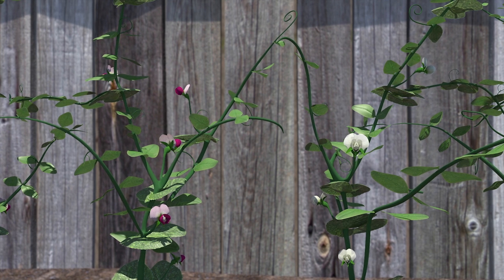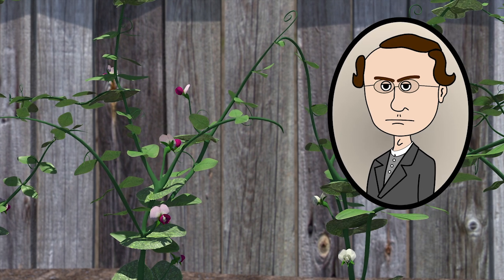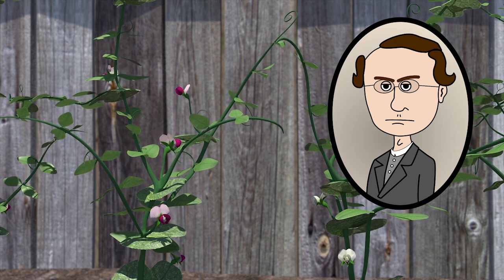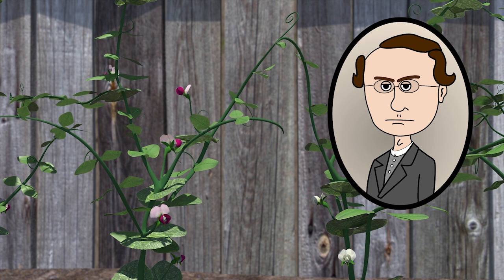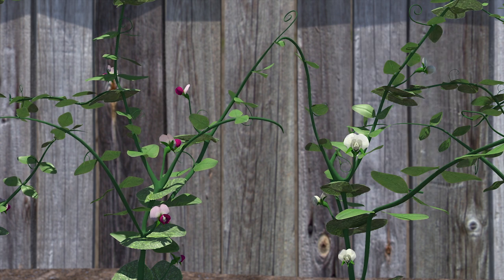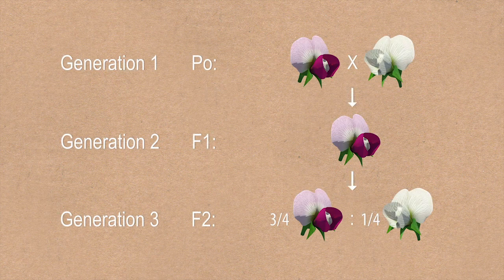The Mendelean cross is named for Gregor Mendel, a 19th century Augustinian monk who performed and documented the first controlled genetic crosses and allowed humanity to begin to understand the nature of inheritance. A Mendelean cross begins with a controlled breeding experiment spanning at least three generations and is designed to determine the inheritance pattern of a trait.